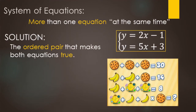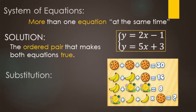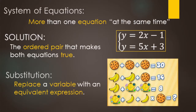When we look at systems of equations, we are talking about more than one equation with more than one variable. If we only have two equations and two variables, the solution to that system is going to be the ordered pair that makes both equations true. In this video we are going to be doing the substitution method, where we replace a variable with an equivalent expression rather than just a number.